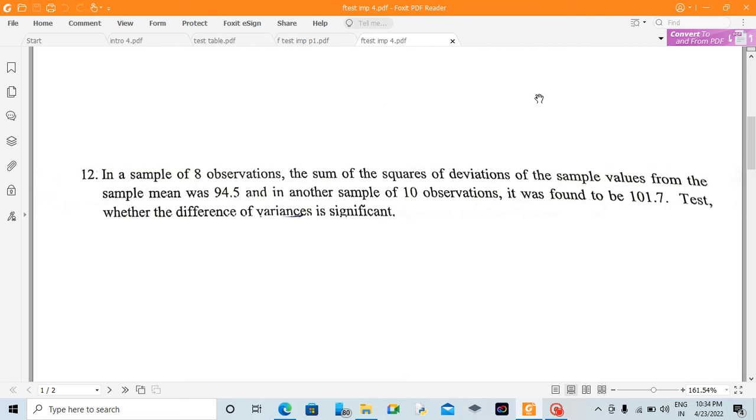Hello viewers, next question. In a sample of 8 observations, the sum of the square of deviations of the sample values from the sample mean was 94.5, and in another sample of 10 observations, it was found to be 101.7. Test whether the difference of variances is significant.